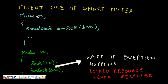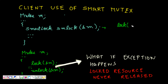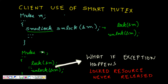Let's see how this works. If we have a mutex class, we make a SmartLock class and pass a pointer to the mutex into it. When the SmartLock object is created, its constructor is called, which calls lock on the mutex pointer. When the object goes out of scope, its destructor is called, which calls unlock on the mutex pointer.